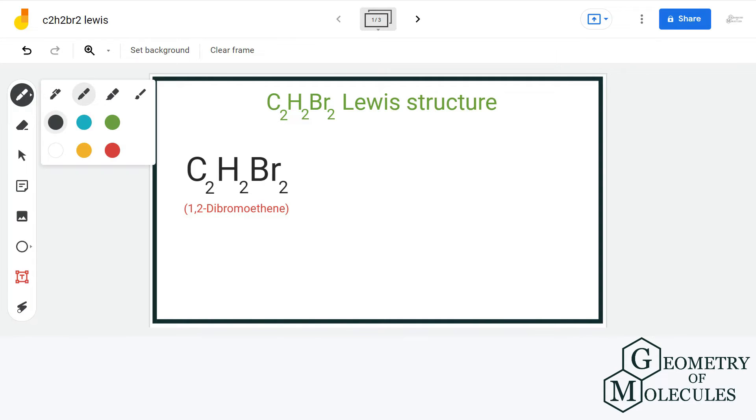For that, let us count the total number of valence electrons. We have 2 carbon atoms having 4 valence electrons, 2 hydrogen atoms having 1 valence electron and 2 bromine atoms having 7 valence electrons. That gives us a total of 24 valence electrons.